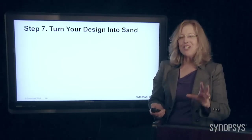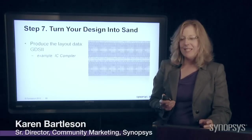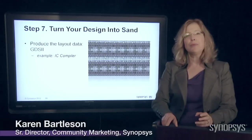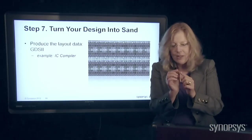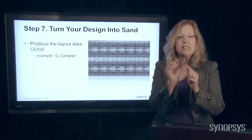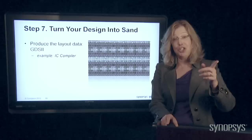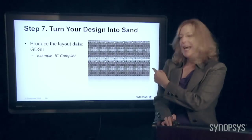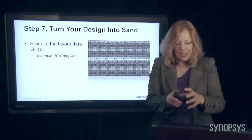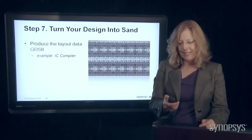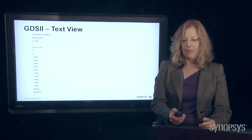The next step is to actually get ready to turn your design into silicon. The first thing you need to do is produce the layout data, which is the instructions for every single little component in that complex chip. This data we call GDS2. This is a graphical image of what it looks like — if you could actually peek at the chip, you'd be able to see something like this. We're going to do this automatically, and there's an example of a tool that does it.